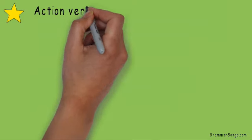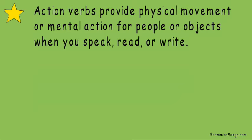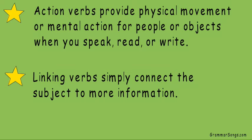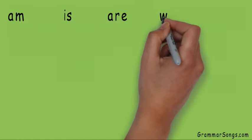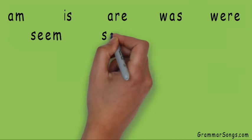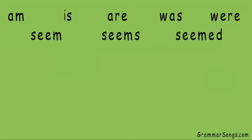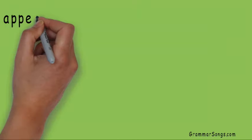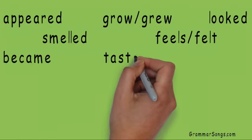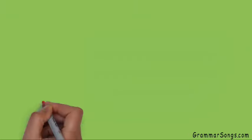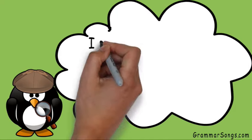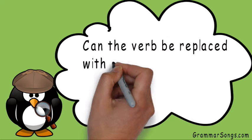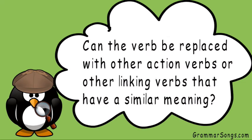So remember: action verbs provide physical movement or mental action for people or objects when you speak, read, or write. Linking verbs simply connect the subject to more information. Am, is, are, was, were, seem, seems, and seemed are some linking verbs you will encounter every day when you speak, read, or write. There are also many other verbs that can be linking or action depending on the situation. When analyzing verbs, look for these clues: Is the verb showing movement or action, or simply connecting information? Can the verb be replaced with other action verbs or other linking verbs that have a similar meaning?